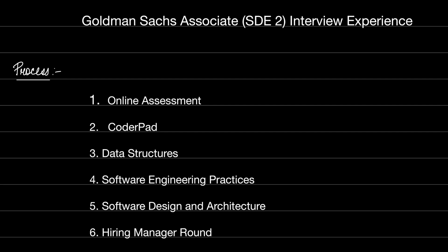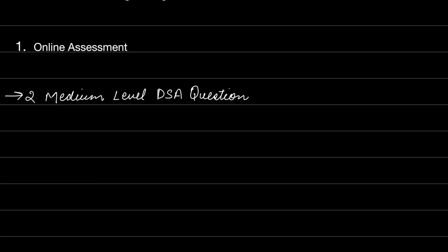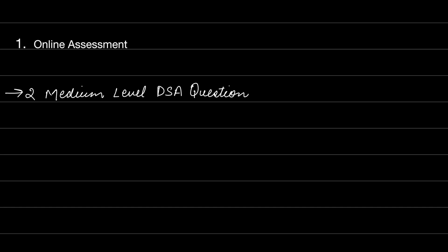In the online assessment, there were only two medium-level DSA questions and the time duration was 120 minutes — essentially one hour per question. It did not take the full 120 minutes since they were medium-level. I was able to complete both questions, and then I had to wait around a week to get the results.